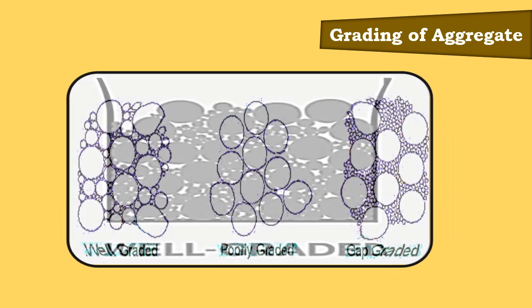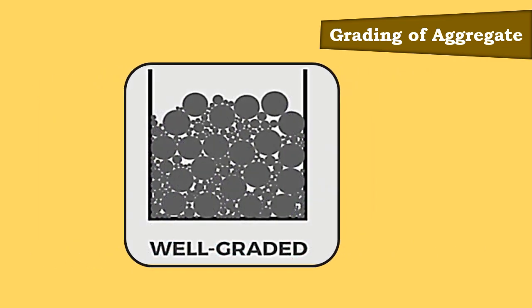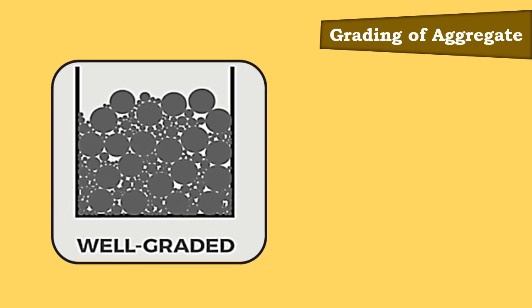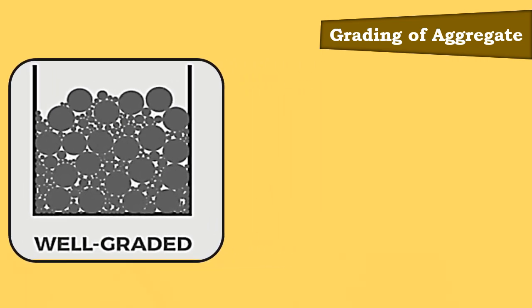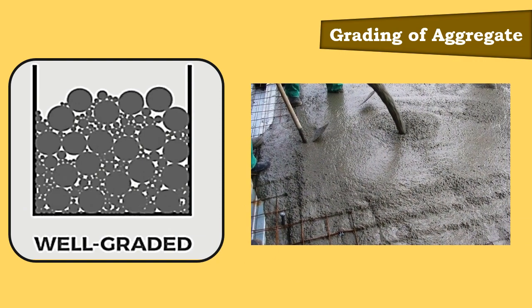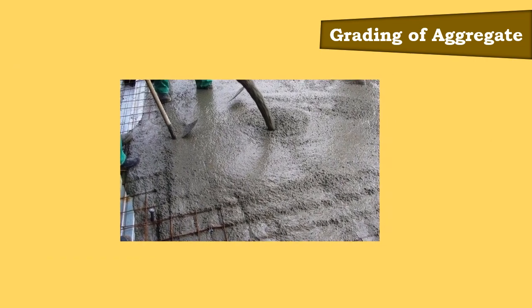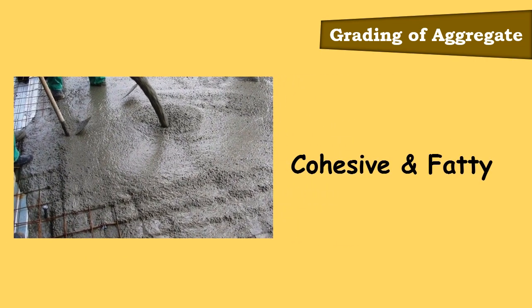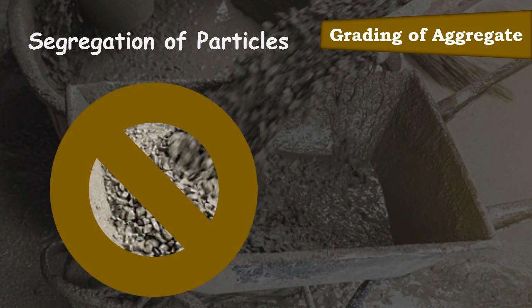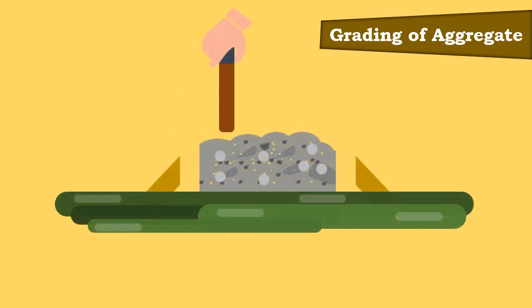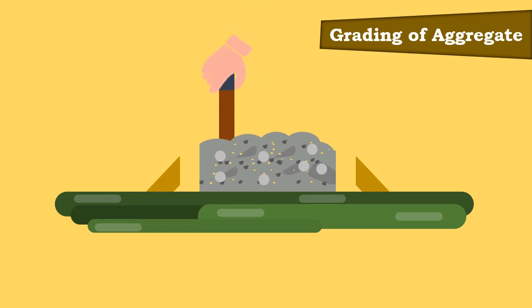A well-graded aggregate has the least amount of voids in a given volume. Thus, when the total voids are less, an excess paste is available to give better lubricating effect. With the excess amount of paste, the mixture becomes cohesive and fatty, which prevents segregation of particles. Thereby, the aggregate particles will slide past each other with the least amount of compacting efforts.